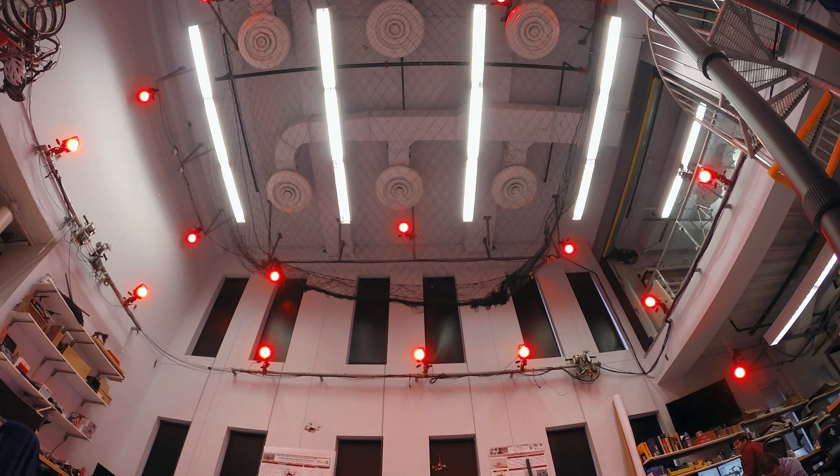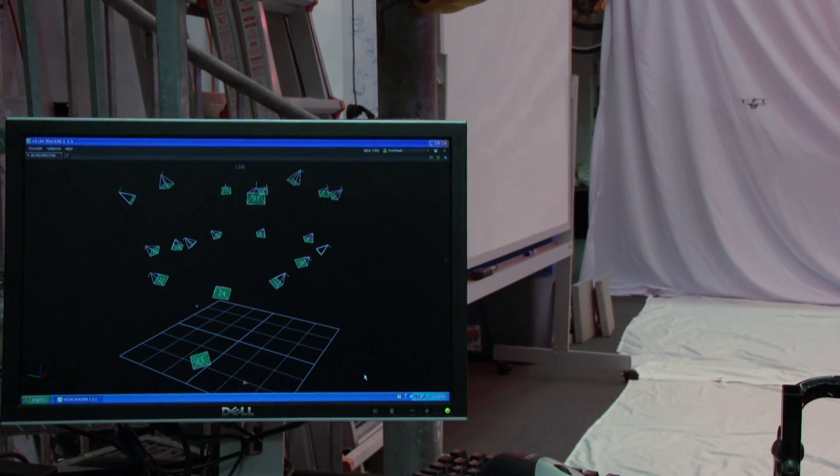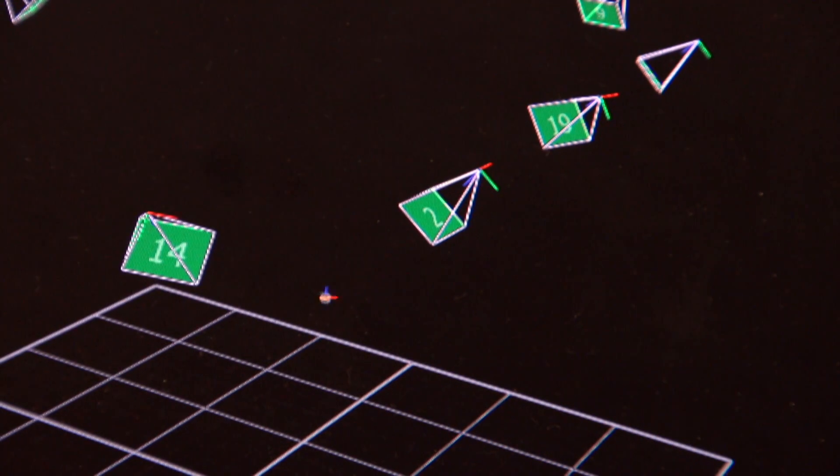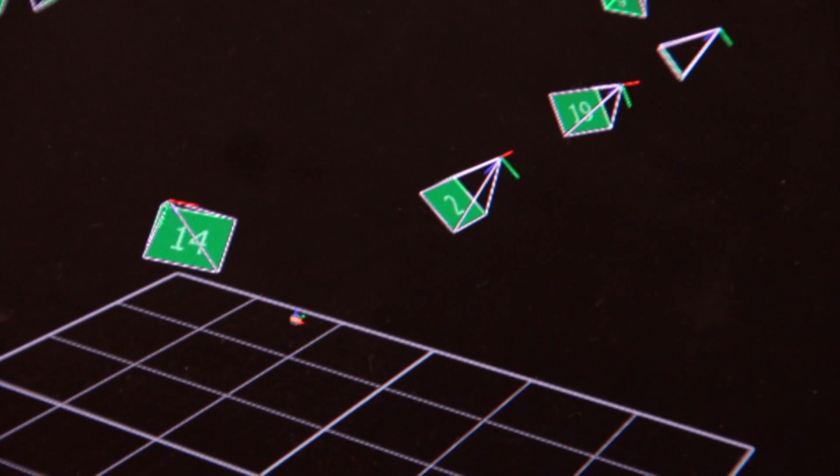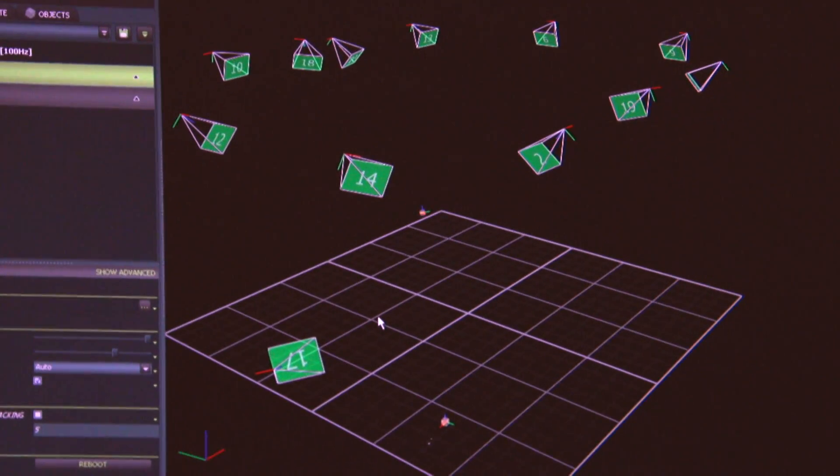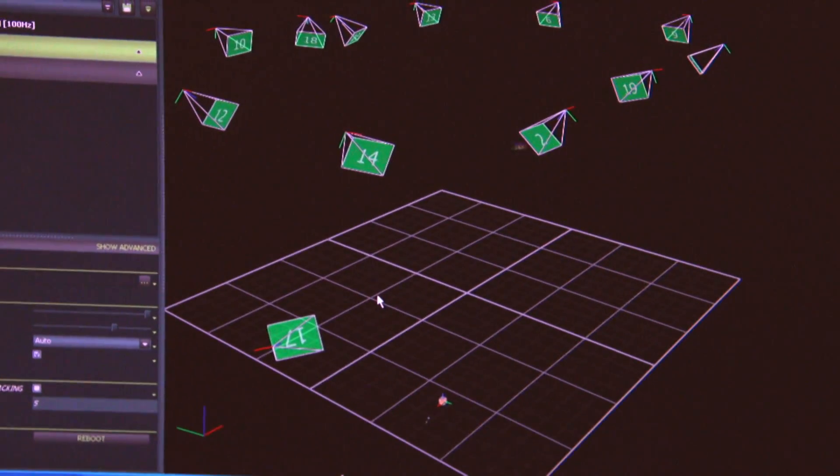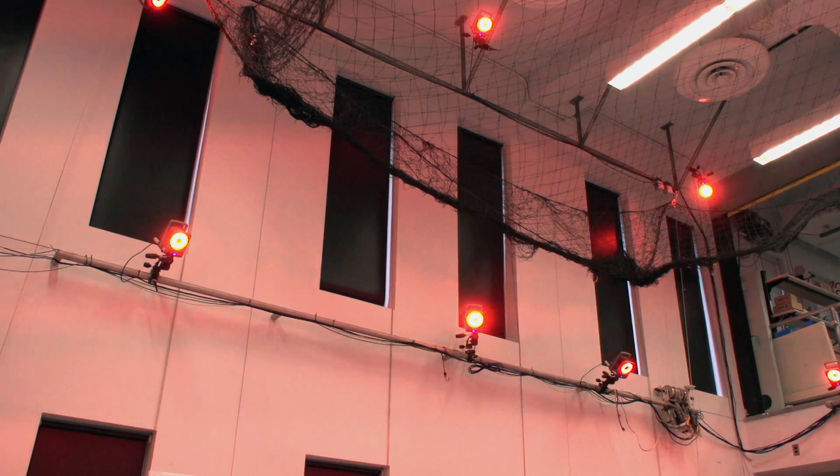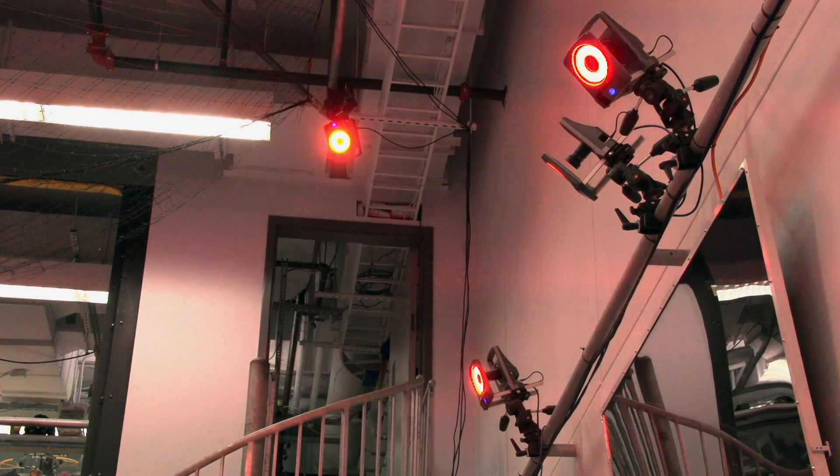The robots themselves are completely blind but they rely on the motion capture system to give them their position. Red lights spread around the room flicker a hundred times a second. Motion capture cameras see how that light bounces off each of the robots and feeds that information back to the main computer. It is the brain for all the Pico quads. It figures out where they are and tells them where to go.